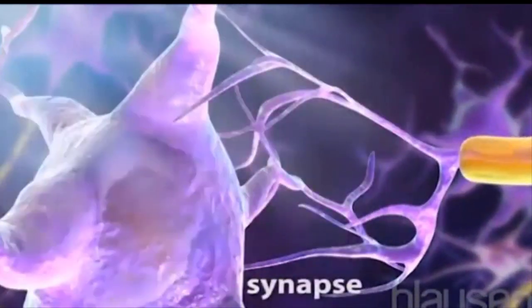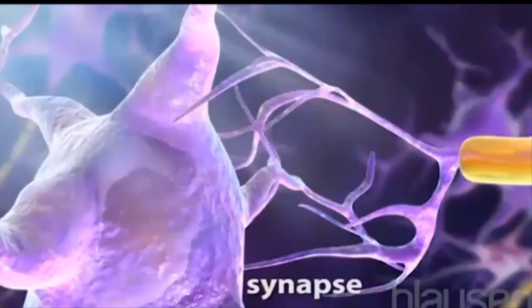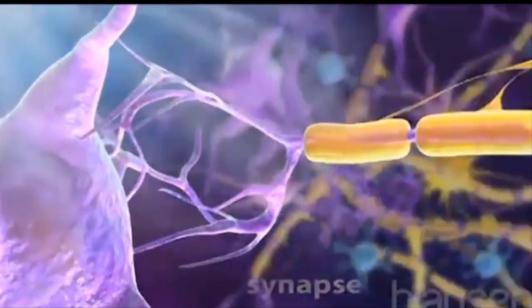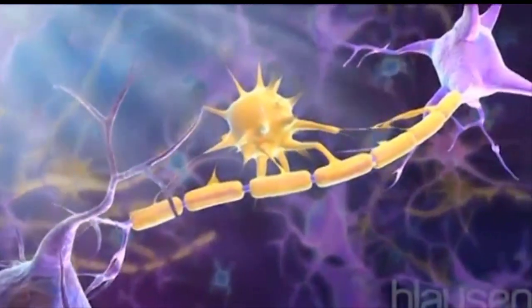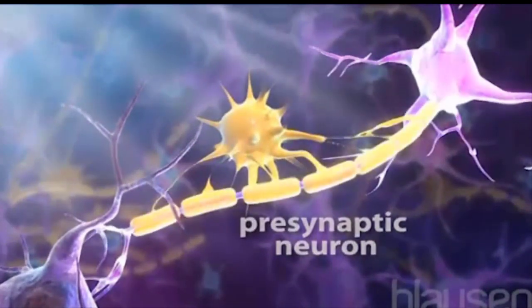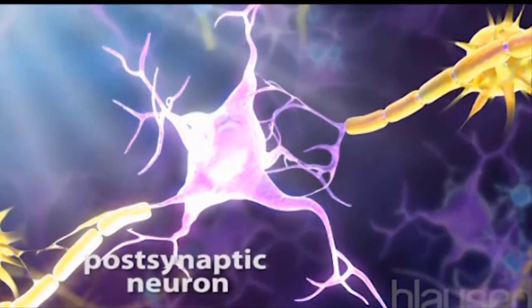One neuron relays information by an electrical signal to another neuron. This occurs at a synapse. The neuron transmitting the information is called the presynaptic neuron, and the neuron receiving the information is called the postsynaptic neuron.